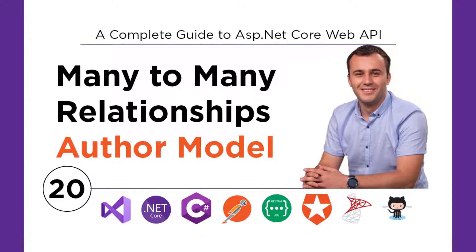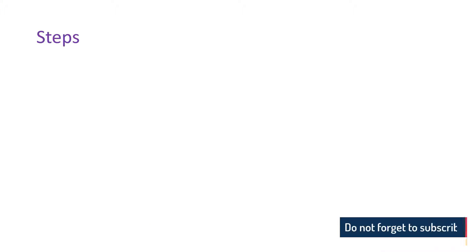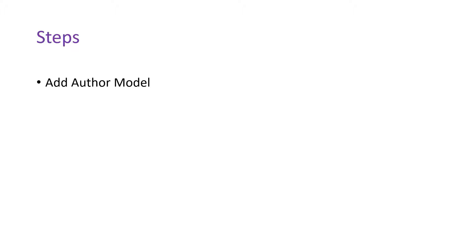In this part, you'll learn how to add a many-to-many relationship using Entity Framework Core. You'll add the Author model because an author can publish multiple books and a book can be published by multiple authors. To add a many-to-many relationship, you'll first add the Author model. Since the relation between Author and Book is many-to-many, you need to add a join table in the database, which means you need to add the join entity in your WebAPI.